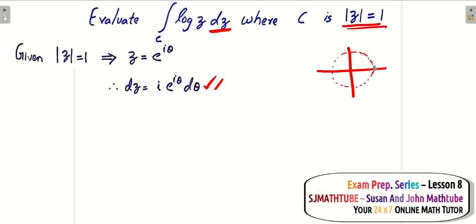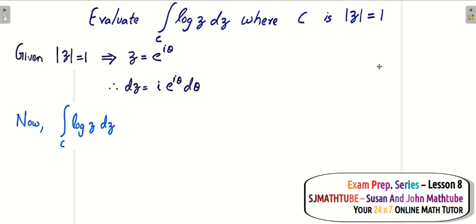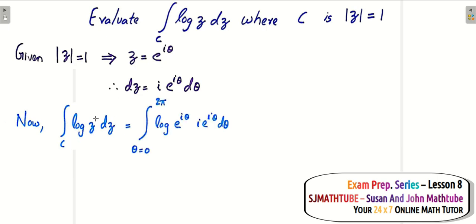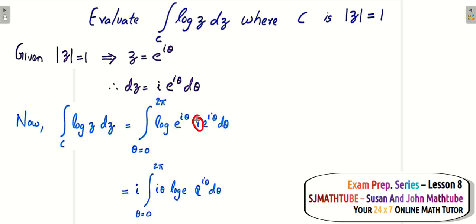To generate all points on the circle, θ goes from 0 to 90 to 180 to 270 to 360 degrees, i.e., 0 to 2π. Now setting up the integral: ∫ log(z) dz becomes ∫₀²π log(e^(iθ)) · i·e^(iθ) dθ. Since log(e^(iθ)) = iθ, and the i is a complex constant that goes outside, we have i·∫₀²π iθ·e^(iθ) dθ.